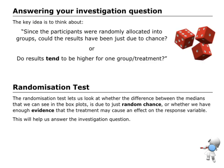Then I need to do my conclusion. In terms of answering my investigation questions, we've got to think about the fact that we were randomly allocating the participants into two groups. Because we were just randomly allocating them in there, could our results have been just due to chance? Or do the results tend to be higher for one of those groups?